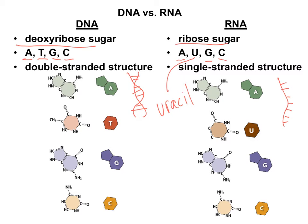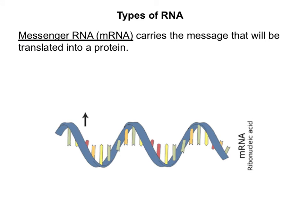The bases in RNA still include adenine, guanine, and cytosine, but there's a new base called uracil. Instead of thymines, RNA will have uracil. So we have the same base pairing rules for RNA: G will pair with C, and A, instead of pairing up with T's, will pair up with a U instead. Messenger RNA carries the message that will be translated into a protein — it's our middleman that transfers the instructions for making a protein out to the ribosomes. It is that single-stranded structure that looks like half of a DNA molecule.